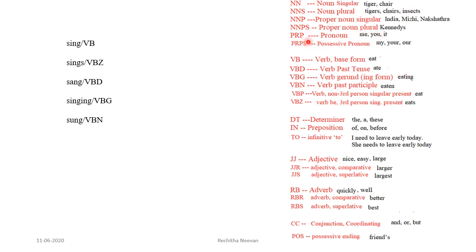PRP is used for pronouns — for example, me, you, he. PRP dollar is a tag for representing possessive pronouns — for example, I, your, our.